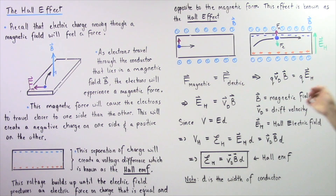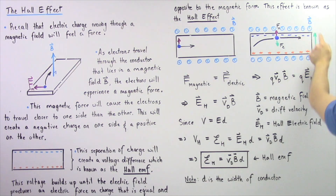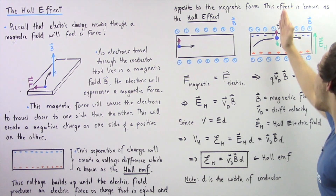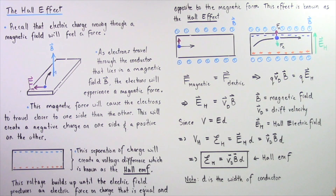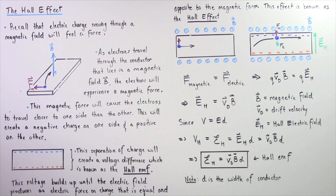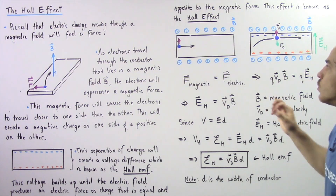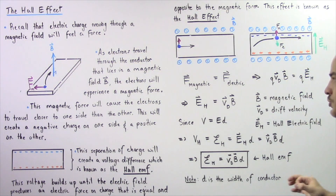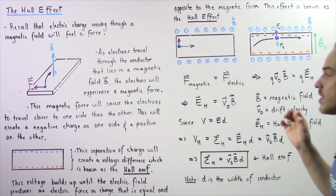As a result of the separation of electric charge, an electric field will exist. That electric field will begin on the positive end and point toward the negative end. As a result of this electric field, an electric force will act on our electric charge, and that electric force will be opposite to the magnetic force. Eventually these two forces will be exactly equal, and at that point our electron will feel a net zero force and travel in a straight line. This effect is known as the Hall effect.